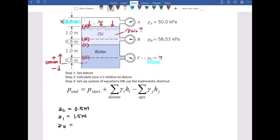Z1 is going to be 1.5 meters. ZB is going to be 2 meters. And ZA is going to be 3 meters. So we have our elevations, our Zs relative to the datum. We've done step one and step two.